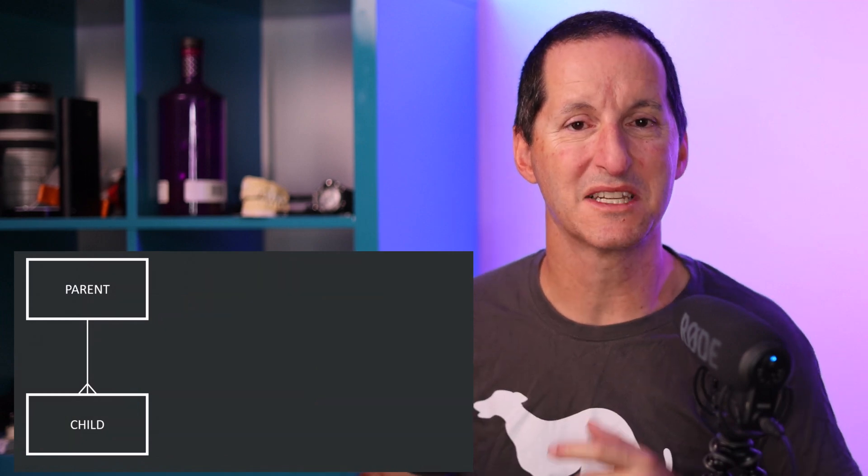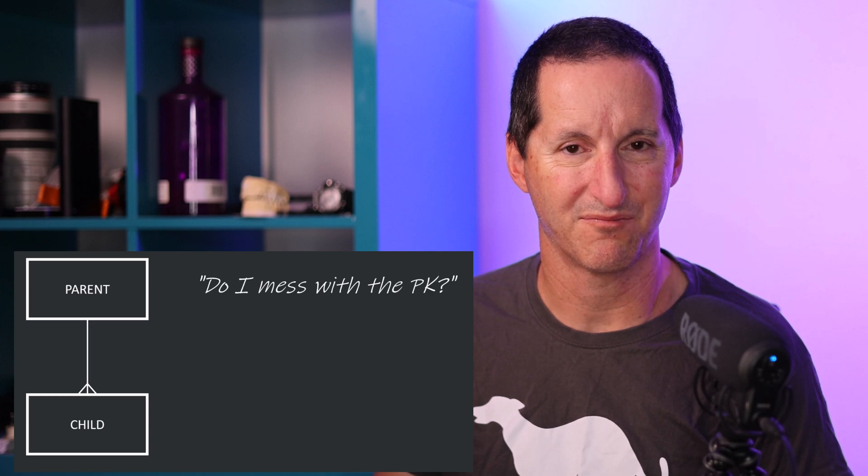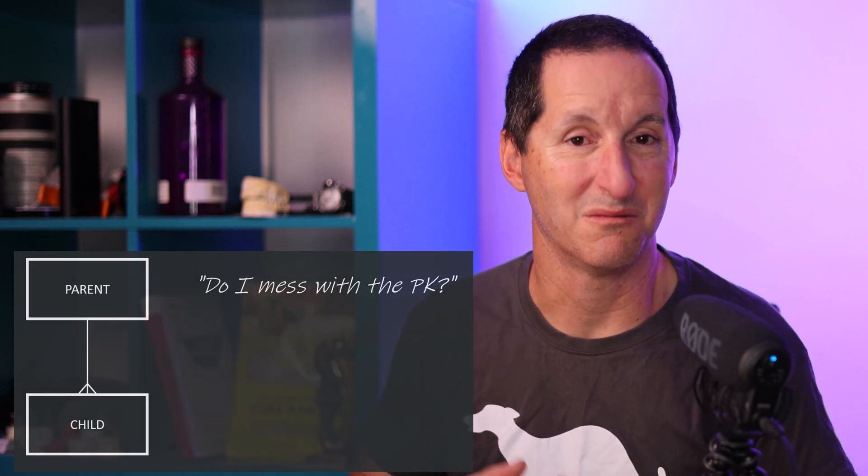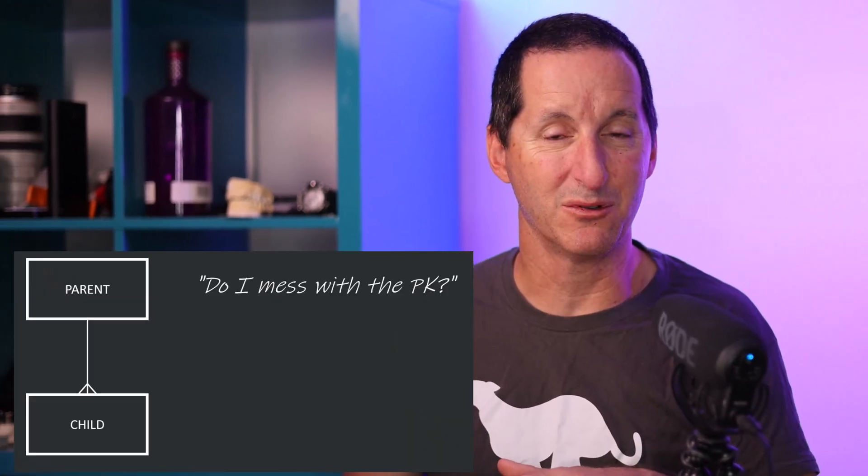On a parent-child table relationship there are only two rules. The first rule is: do you mess with the parent primary key? If you delete a parent row, you're removing a primary key — so yes, you'll likely need a foreign key index on the child table. Do you update the primary key? You might think that's bad design since a primary key should be immutable, but sometimes you do need to change it. More likely, some applications update every single column during a row update, including the primary key even when it's not changing — that still counts as updating the primary key, so you'd need a foreign key index on the child table.